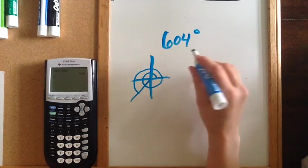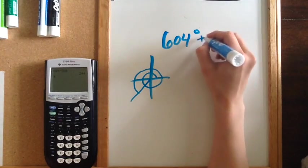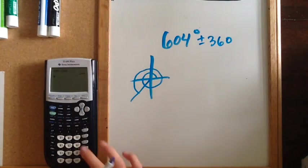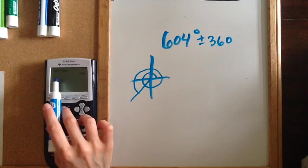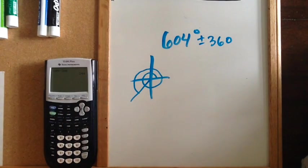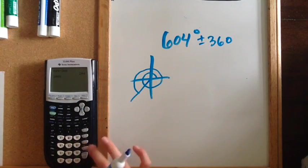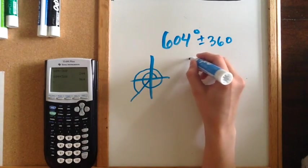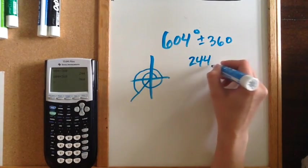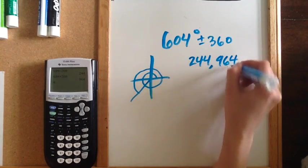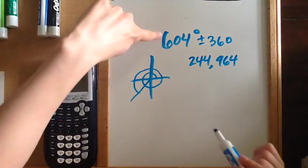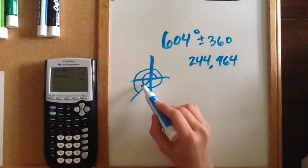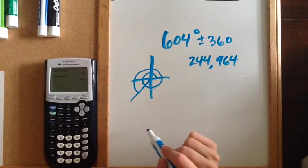Now if I want to find positive and negative coterminal angles I'm going to add and subtract 360 degrees. We've already subtracted 360 and got 244, so if I do 604 plus 360 I'm going to get 964. So we have 244 and 964. But notice both of these are positive because our original number was around more than one full time.